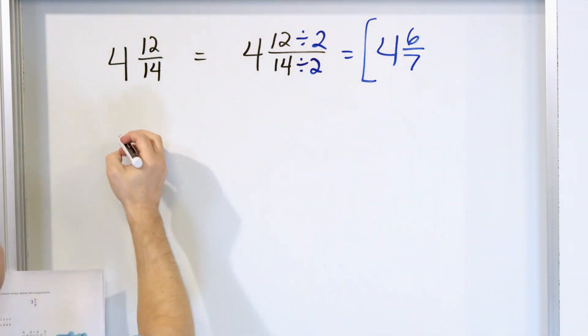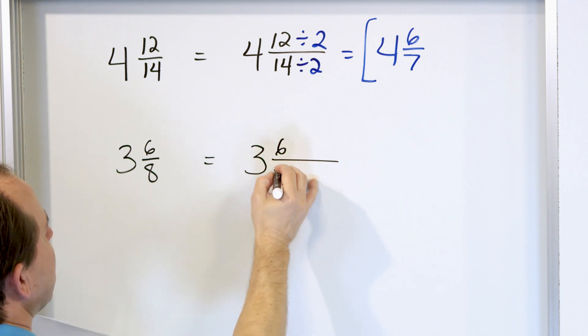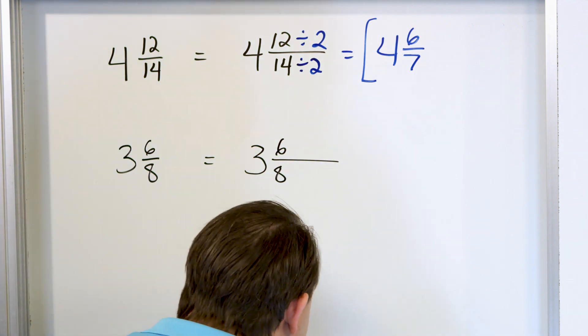Let's take a look at problem number 2. What about 3 and 6/8ths? Again, I have even numbers here so we'll try that. The 3 comes along for the ride. The 6/8ths, we want to divide top and bottom by 2.